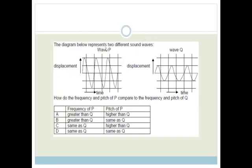Now, it says, the diagram below represents two different sound waves. There's wave P and wave Q. And this is the displacement, and this is the time. So, what do we know? We know the displacement is the amplitude, and the amplitude represents the loudness. So, the bigger the amplitude, the louder it is. Then what else do we know? We know that the frequency affects the pitch. The higher the frequency, the higher the pitch.